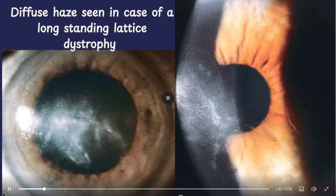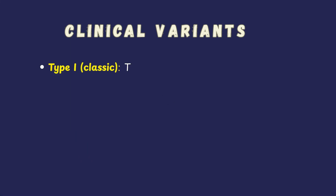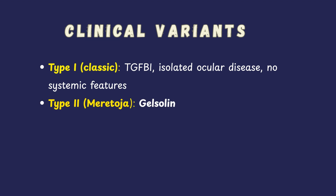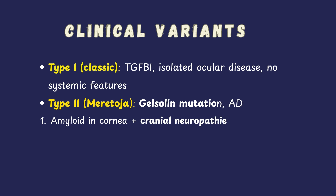There are two clinical variants of lattice corneal dystrophy: Type 1 and Type 2. Type 1 is the classic form and is considered a true corneal dystrophy, whereas Type 2 is not. Type 1 is linked to the TGF-β1 gene mutation and is an isolated ocular disease with no systemic involvement.